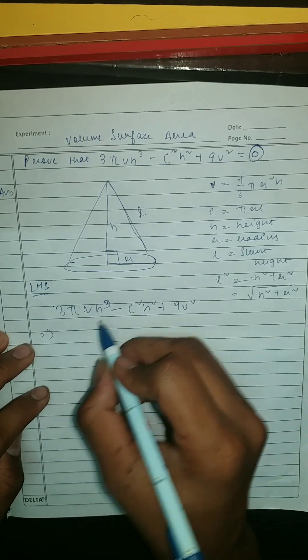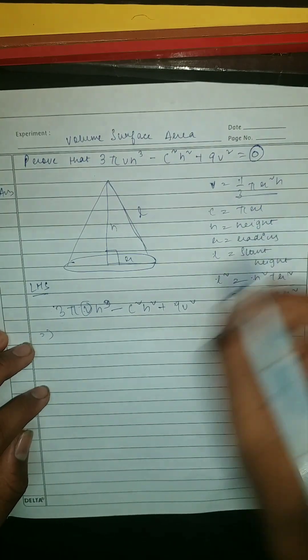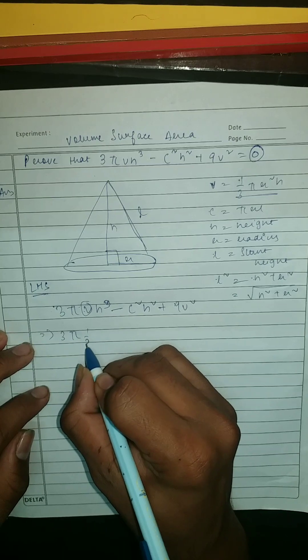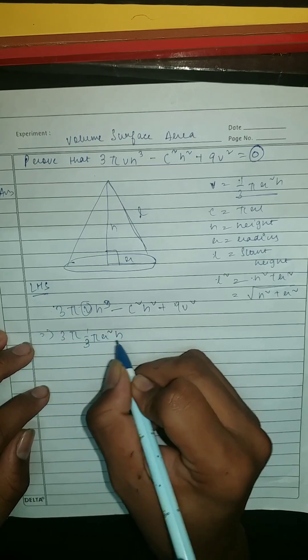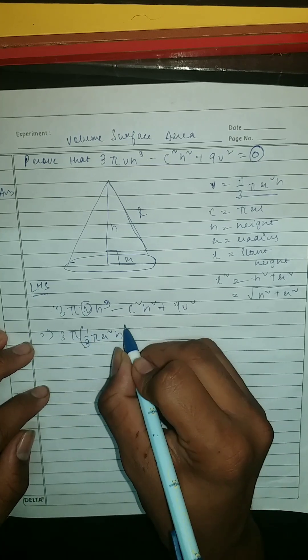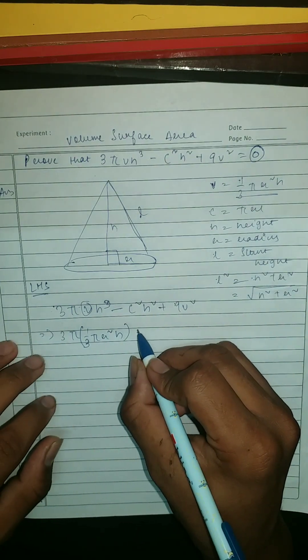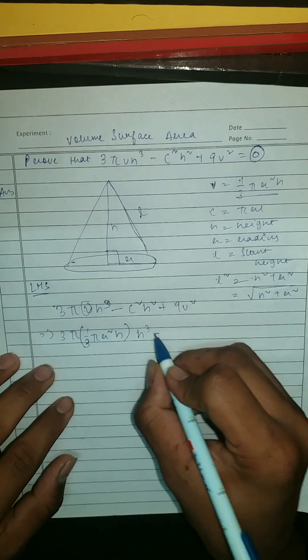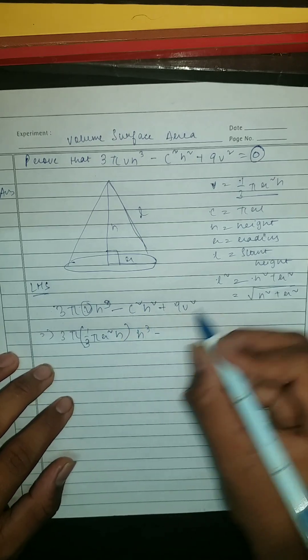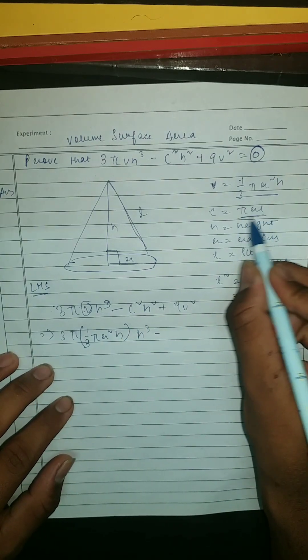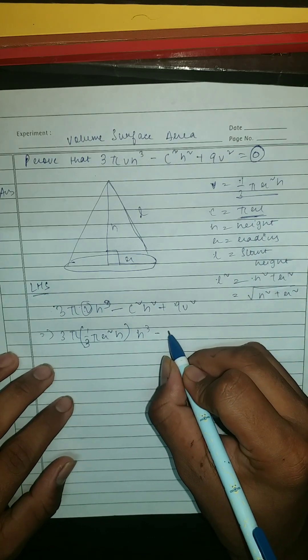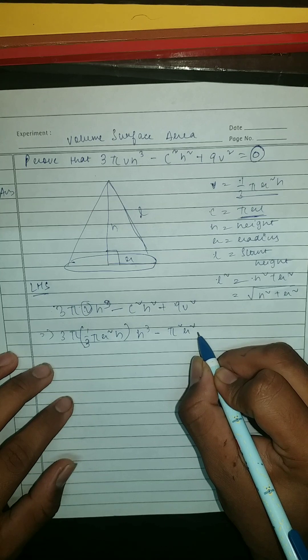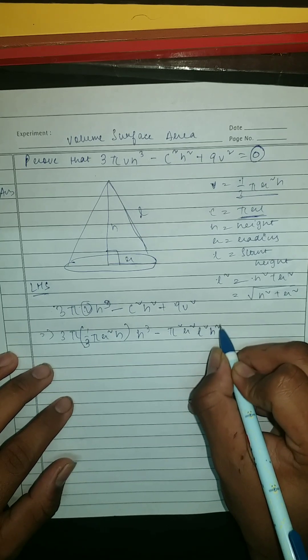Here we're gonna write this V as this, so this should be 3π × 1/3πr²h. Here as you can see I'm going to do this in bracket so you can understand this: h³ minus. Then after that, this should be your C² - as we have written πrl - this should be π²r²l²h².